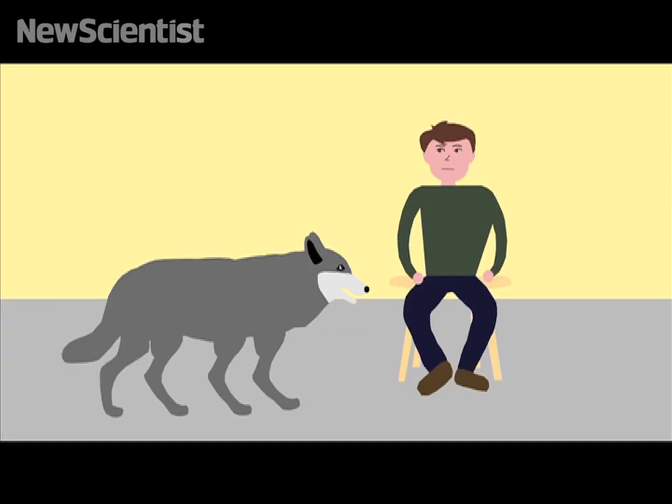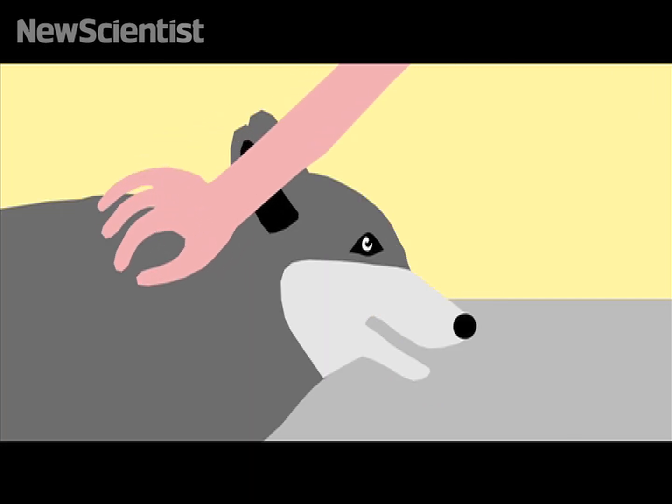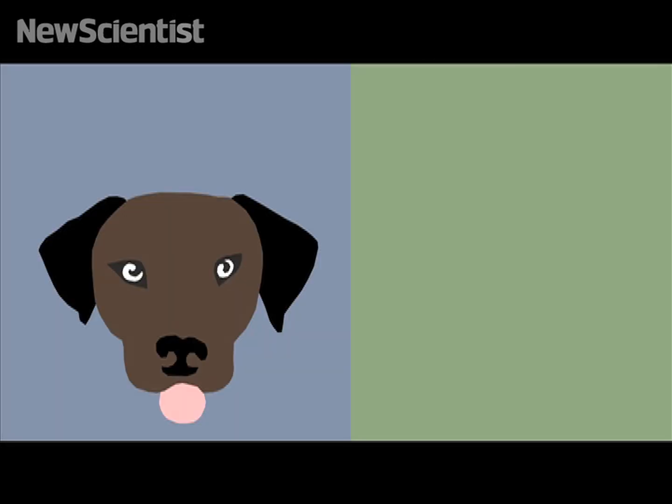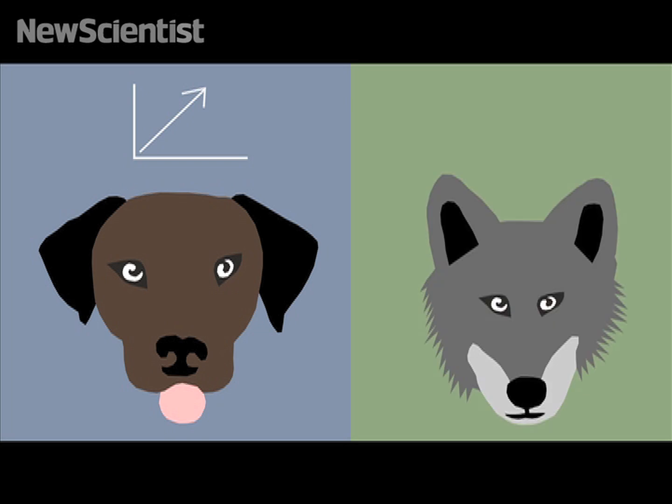The researchers also performed this same experiment on wolves that had been raised by humans their whole lives. Nagasawa and the other researchers found that after gazing into each other's eyes, both dog and owner had increased oxytocin levels in their urine. Wolves, however, did not, nor did the owners who gazed into their eyes.